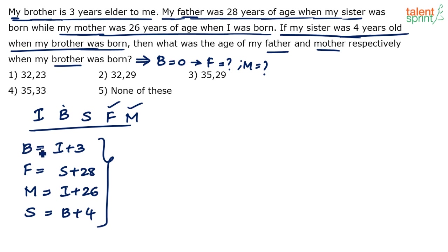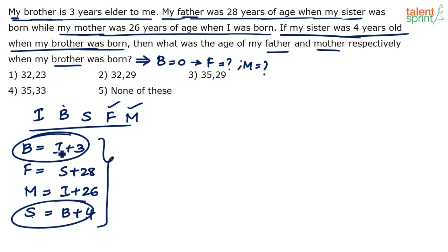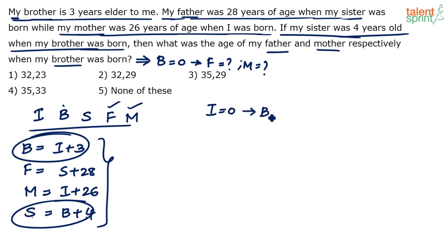Clearly, brother is elder to me and sister is elder to brother. Brother is three years older than me; sister is four years older than brother. So sister is the eldest, then brother, then me. If i = 0, then b = 3 and s = 7.